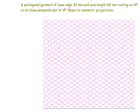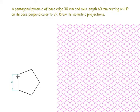A pentagonal pyramid of base edge 30mm and axis length 60mm resting on HP on its base perpendicular to VP. We need to draw the orthographic projections of the pyramid. First, I will construct the pentagon of the given side length.